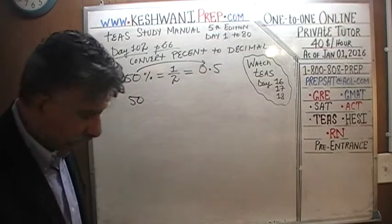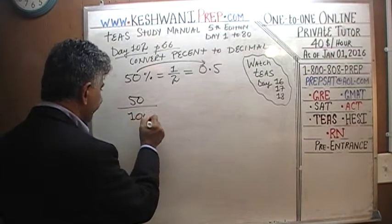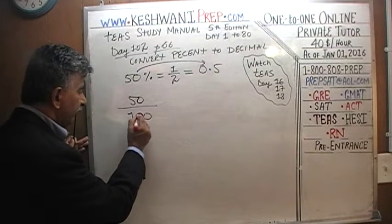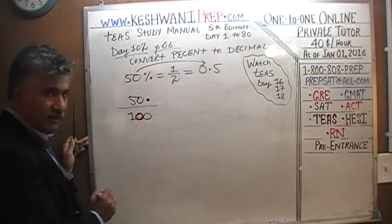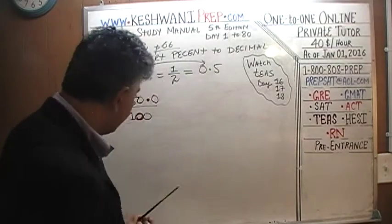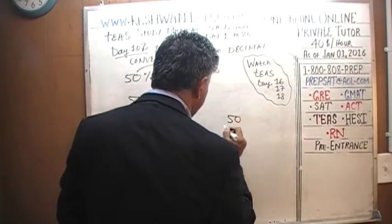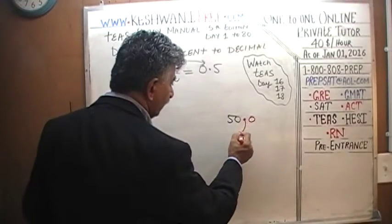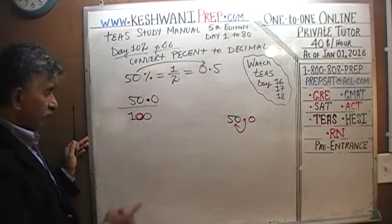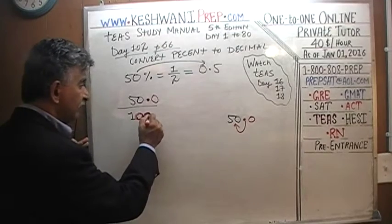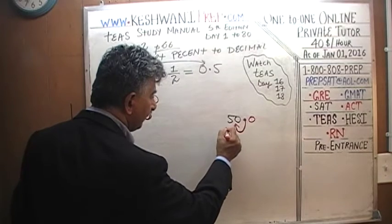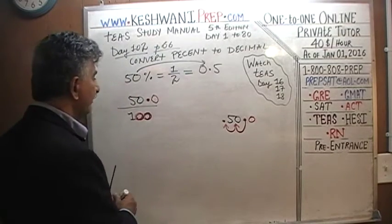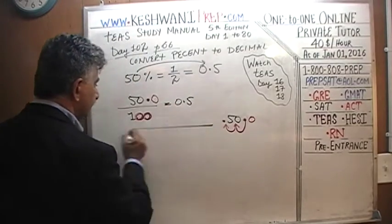So we have 50 percent and we want to get to 0.5. What we need to do is take our 50 and divide by 100. When you divide a quantity by 100, we pick our decimal — which exists at the end of 50, written as 50.0 — and since 100 has two zeros, we move the decimal two spots to the left: one spot, then another. It ends up giving us 0.5. That's how 50 divided by 100 equals 0.5.